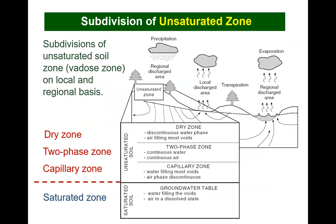The unsaturated soil zone can be divided on both a local and regional basis. The soil in the capillary zone may be close to saturation, with the water phase continuous and the air phase discontinuous. The break between the capillary zone and the two-phase zone is defined as the air entry value of the soil. The two-phase zone has both water and air phases behaving as continuous fluid phases. A dry zone exists near the ground surface where the water phase is discontinuous and the air phase is continuous.